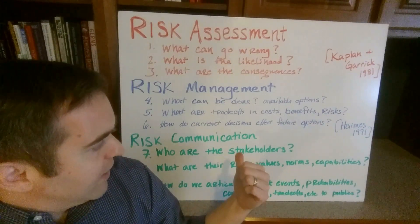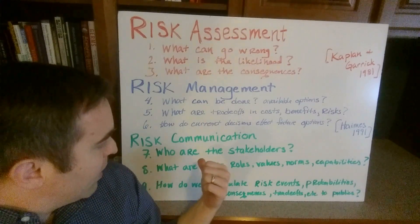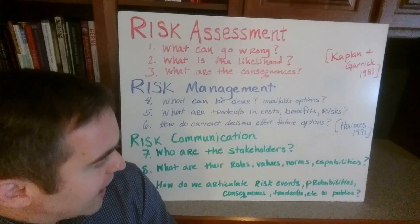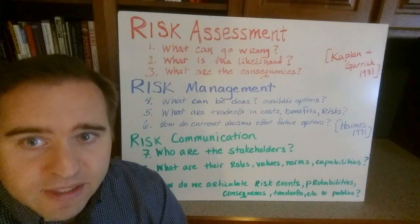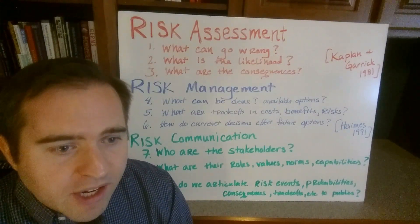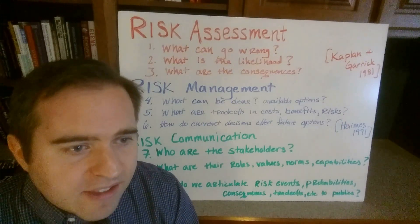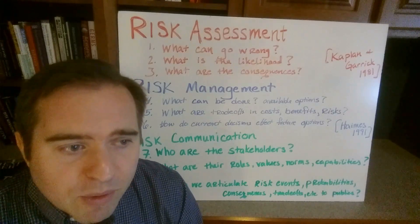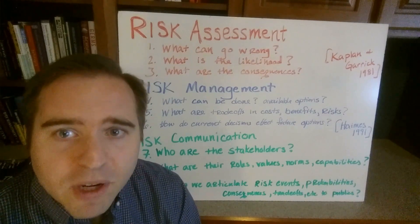Risk communication is how we affect this change. The questions are: who are the stakeholders? What are their roles, values, norms, and capabilities? And how do we articulate risk events, probabilities, consequences, trade-offs, and so forth to different publics? Not everyone has the same understanding or same authorities. Bill Lawrence actually said in his book on acceptable risk, the ultimate question of risk is: who should decide what risks are acceptable to whom, under what circumstances, and why?